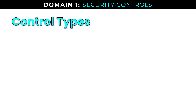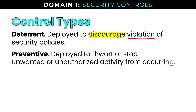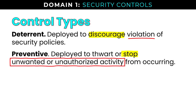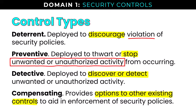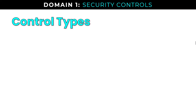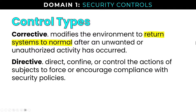Now let's dive into control types. Deterrent controls are deployed to discourage violation of security policies. Preventive controls are deployed to thwart or stop unwanted or unauthorized activity from occurring. Detective controls are deployed to discover or detect unwanted or unauthorized activity. Compensating controls provide options to other existing controls to aid in enforcement — they are supporting or redundant controls. Corrective controls modify the environment to return systems to normal after an unwanted or unauthorized activity has occurred. Directive controls direct, confine, or control the actions of subjects to force or encourage compliance with security policies.